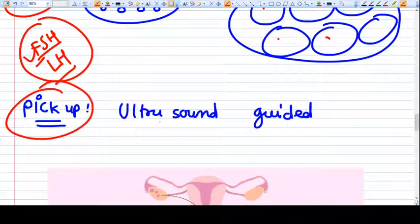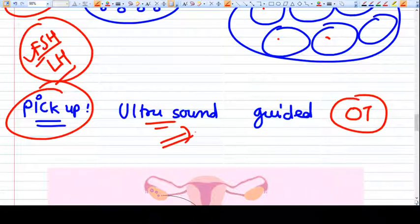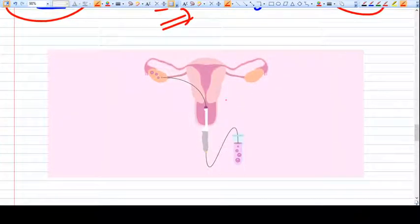Pickup is a procedure done in the operation theater and is ultrasound-guided. For example, if you see here, this is a uterus, this is a vagina. We introduce a transvaginal probe into the vagina, and from the probe a needle comes out. That needle will suck out the ova from the follicles, and the ova will come into a test tube.